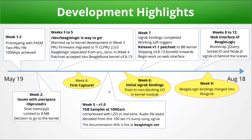In week five, since BeagleLogic was in a quite usable state, the patch set was submitted to the BeagleBone community kernel and got accepted. A documentation wiki was also made live at BeagleLogic.net. In weeks six and seven, work was done on the SigRok bindings, implementing the poll and lseek functions for non-blocking IO. The SigRok bindings were completed with working software triggers, and a second patch was released, included since kernel versions after bone60.